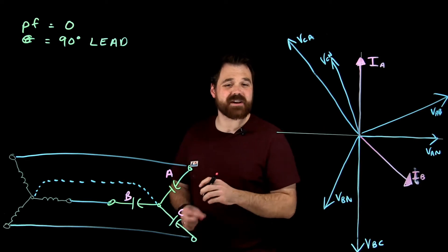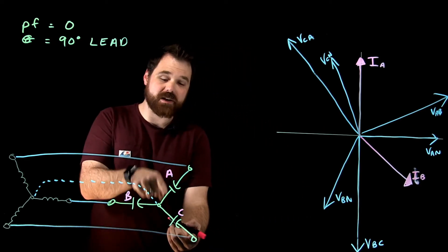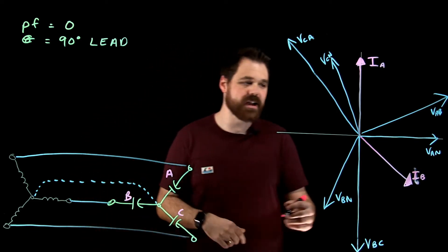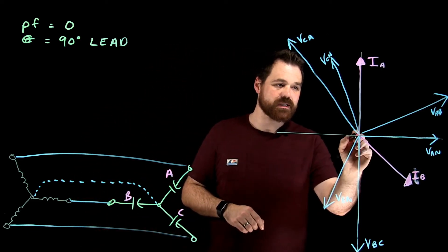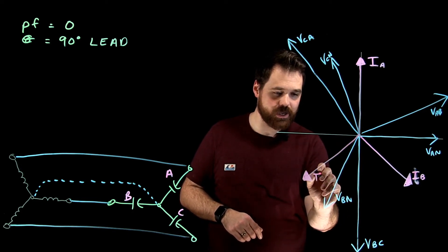And then we see the exact same thing in phase C, where in phase C, my current through phase C leads the voltage by 90 degrees. So that's going to put it right here, IC.